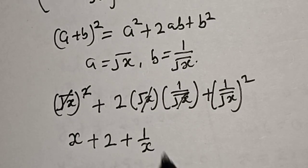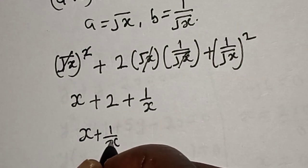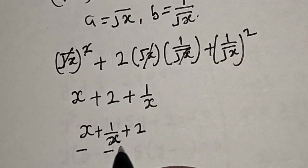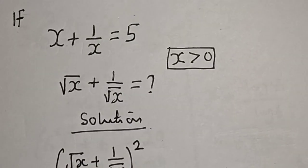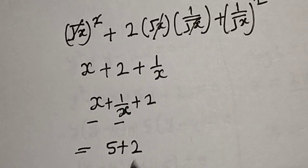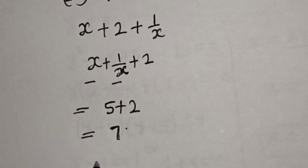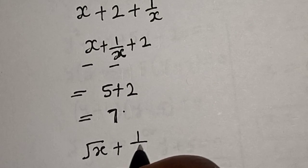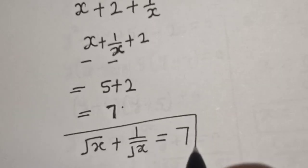Rearranging, we have s plus 1 over s plus 2. From the given equation, s plus 1 over s equals 5. Substituting, this becomes 5 plus 2, which equals 7. Therefore, square root of s plus 1 divided by square root of s, when squared, equals 7, so the answer is 7.